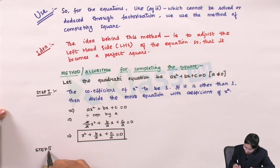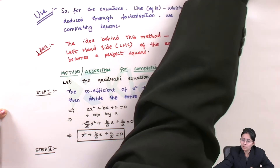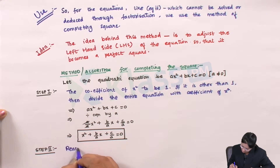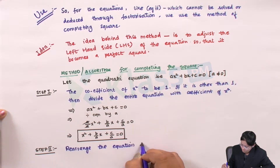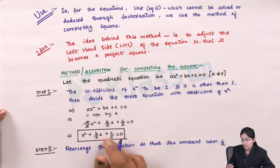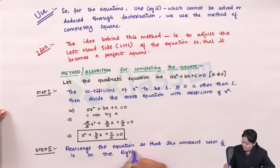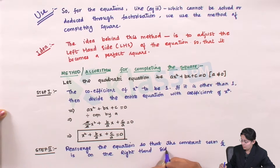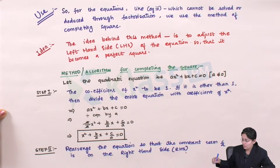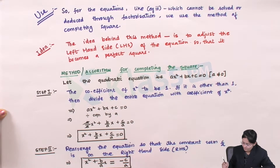Now Step 2: After getting that equation, rearrange it so that the constant term c/a moves to the right-hand side. It becomes x² + (b/a)x = −c/a. This is what Step 2 gives us.